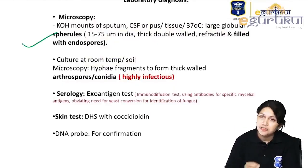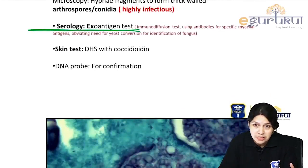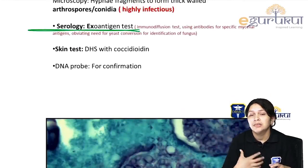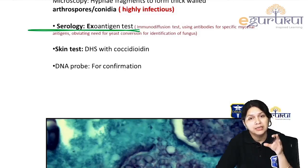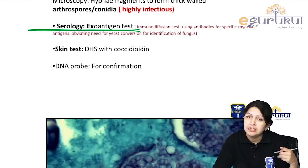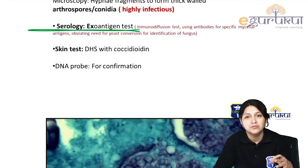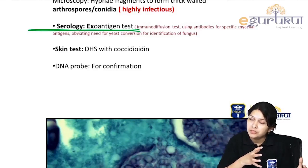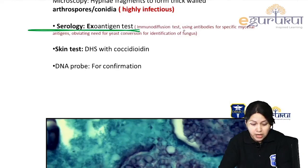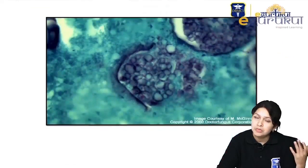Spherules with endospores; culture shows arthrospores. For dimorphic fungi, the exoantigen test is used — it uses specific antigens produced by the fungus and specific antibodies to see if lines of precipitation form by immunodiffusion. The diagnostic yeast phase is used. A skin test can also be performed for dimorphic fungi.